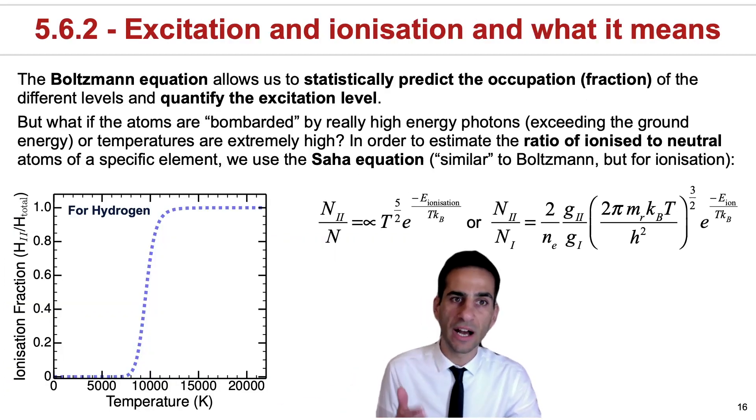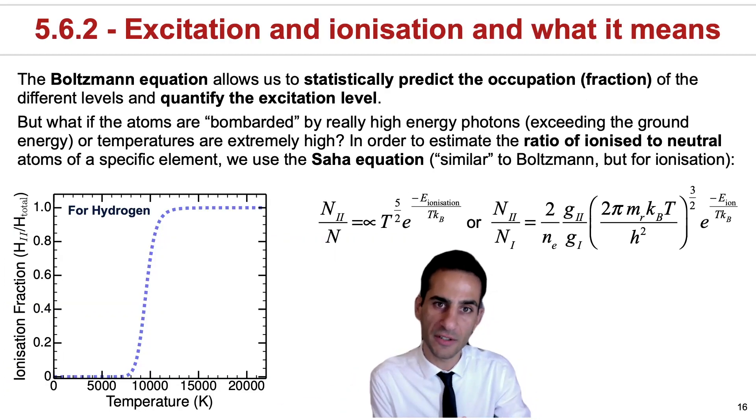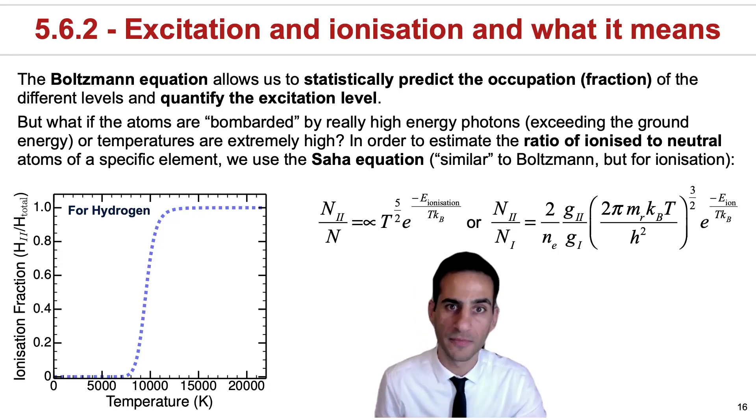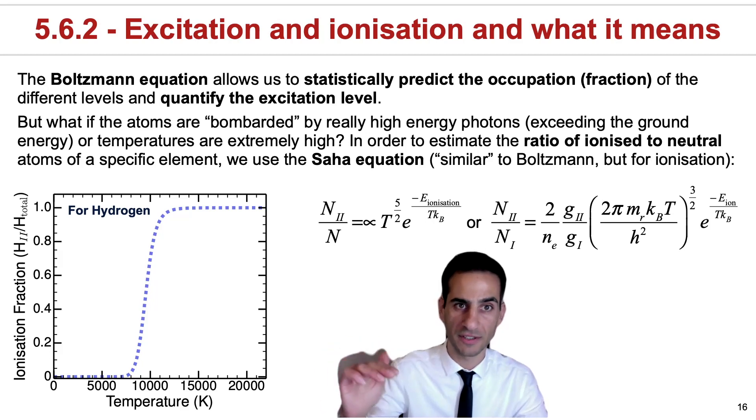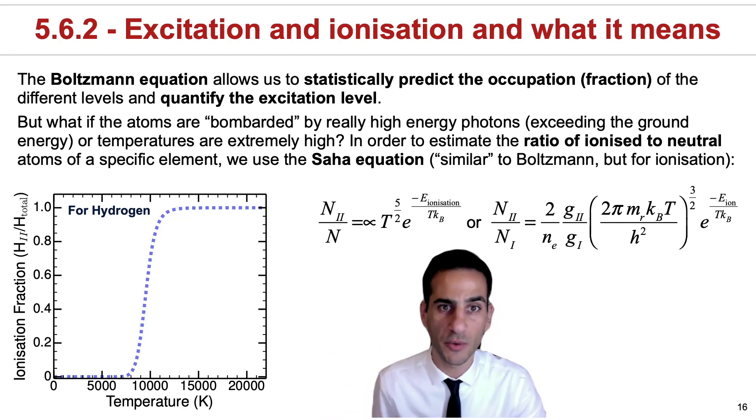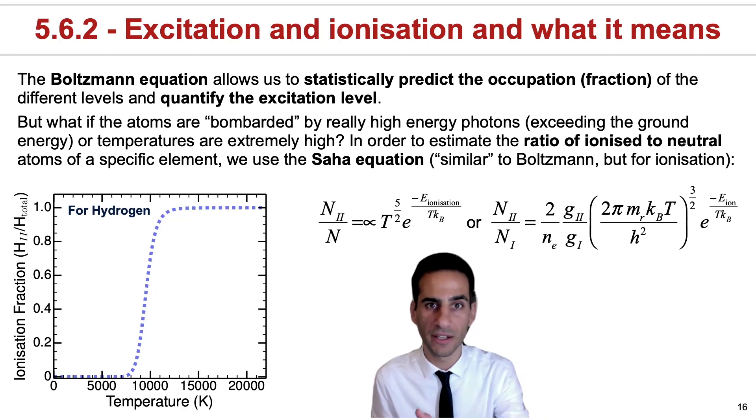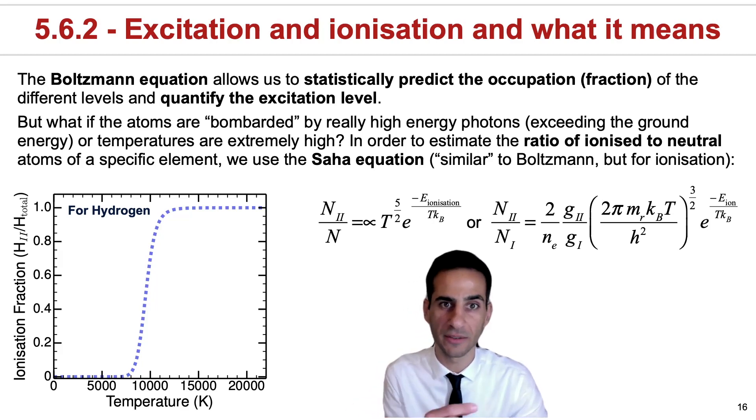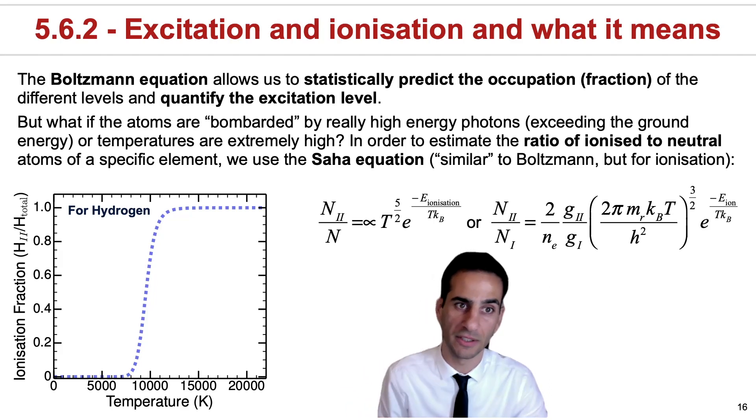We've seen how essentially the Boltzmann equation allows us to statistically predict the occupation or the fraction of electrons. They're at some higher level versus lower level. And this allows us to quantify the excitation level. If we do the calculations, we can actually look at the probability of some atom emitting some photon, because that is associated with a significant population of electrons at a specific level.